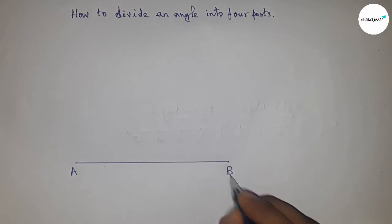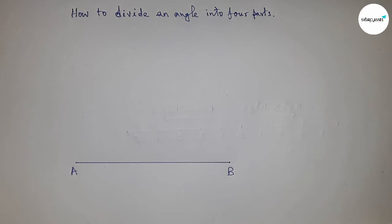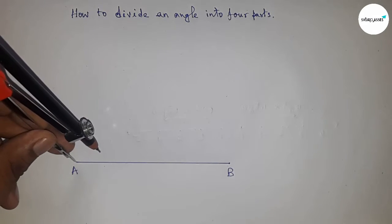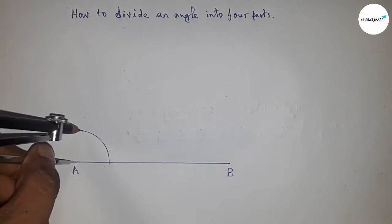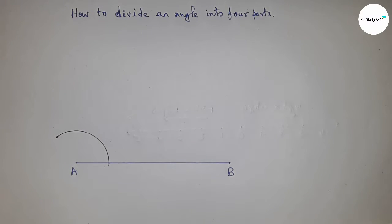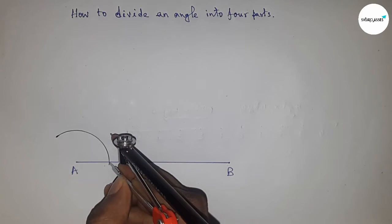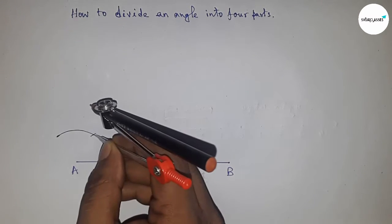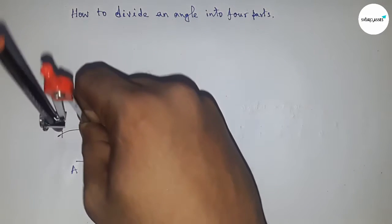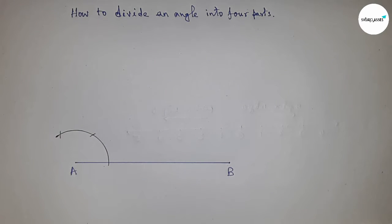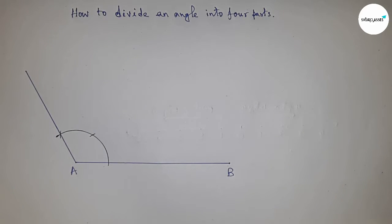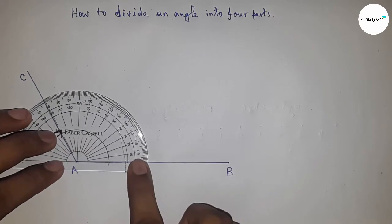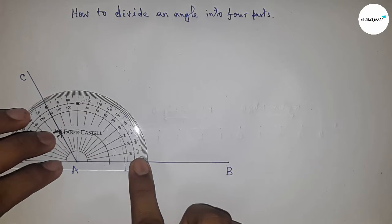This is line AB. Next, we construct an angle — let's take 120 degrees. First, constructing 120 degrees: put the compass here with the same length and cut here, then put the compass here with the same length and cut again. Joining these points gives us the 120 degree angle, and this point is C.